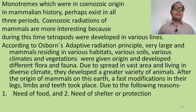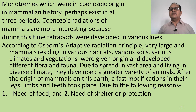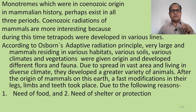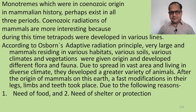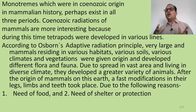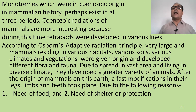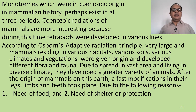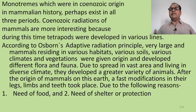Monotremes, which have a Cenozoic origin in mammalian history, perhaps existed across all three periods. Cenozoic radiation of mammals is more interesting because during this time tetrapods developed in various lines. According to Osborn, the adaptive radiation principle shows very large mammals residing in various habitats, soils, climates, and vegetation giving origin to different flora and fauna. Due to spread across vast areas and diverse climates, a greater variety of animals developed.